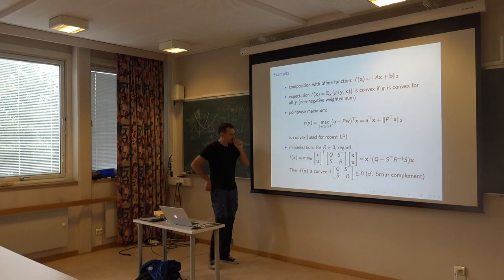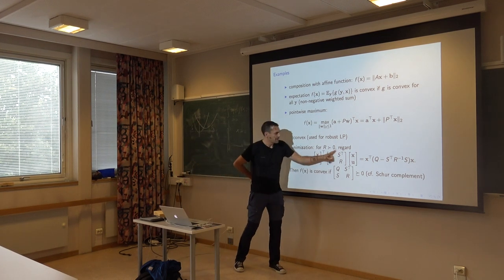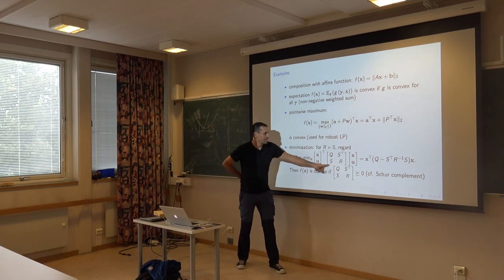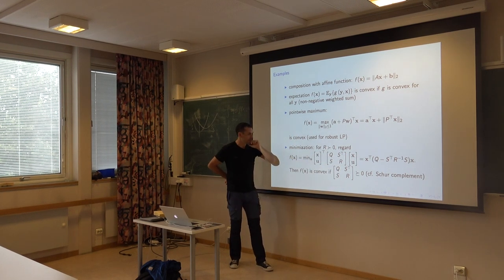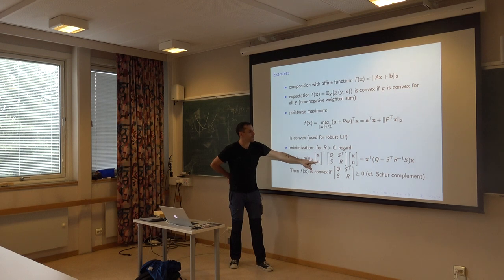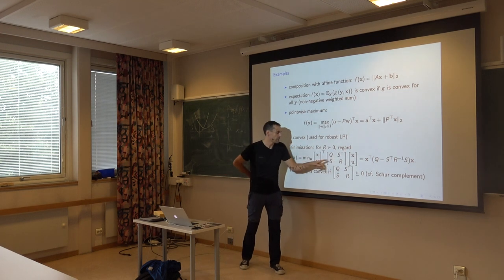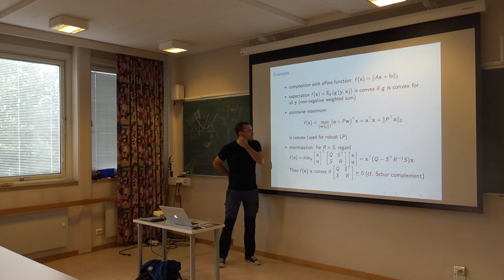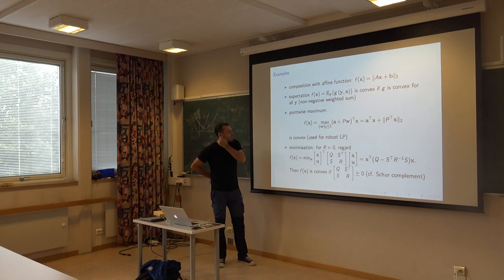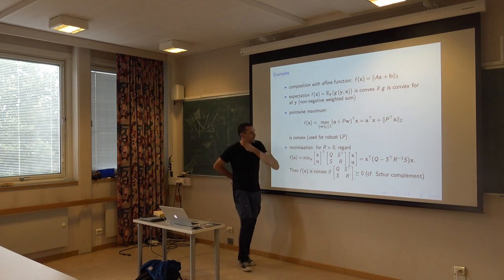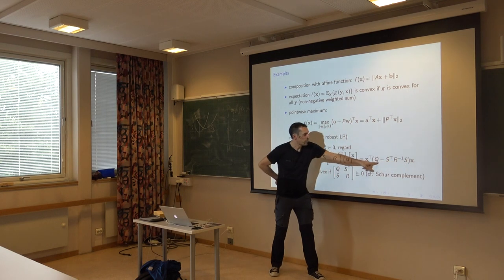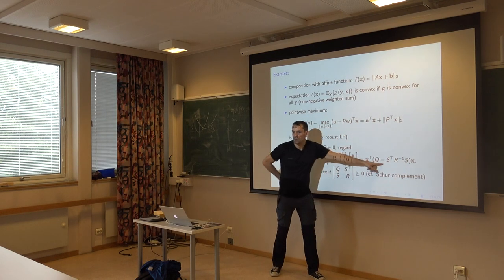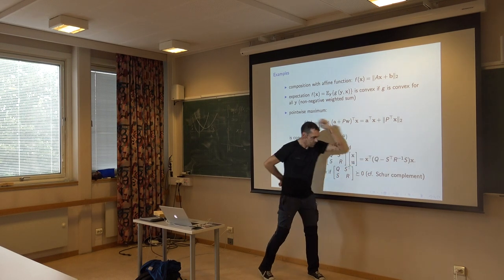An example used in control is essentially an LQR problem: find the control u that minimizes a quadratic form for a given state x. The outcome of this is the Schur complement. This transformation is convex if the matrix is positive definite.